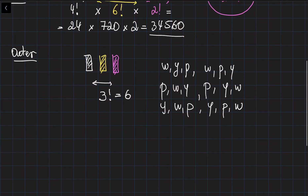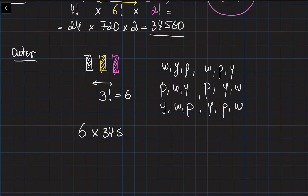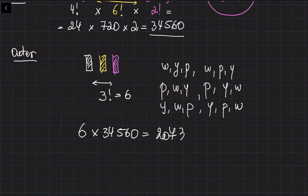So the total number of rearrangements is going to be 6 times 34,560, which equals 207,360 rearrangements. This is the solution for this problem.